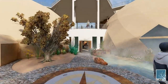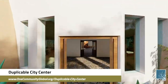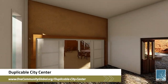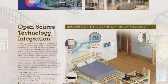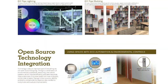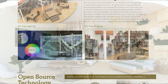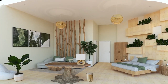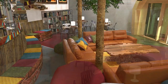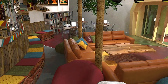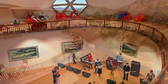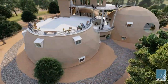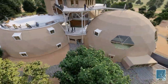One Community is also creating an open source duplicable city center designed to be LEED Platinum certified, provide 12 guest rooms, dining for over 150 people, and laundry and recreation space for over 300 people, all while saving money, time, space, and resources.